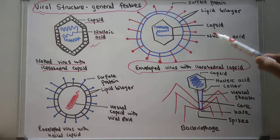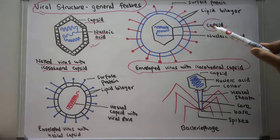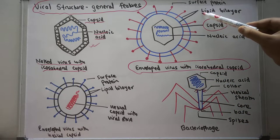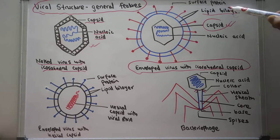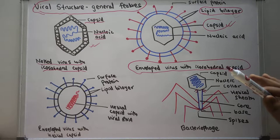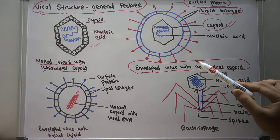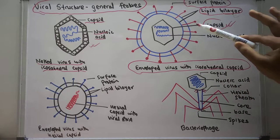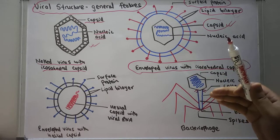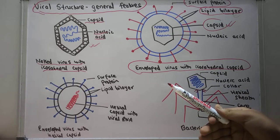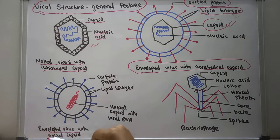The next virus is the enveloped virus with icosahedral capsid. The icosahedral capsid is enclosed within the lipid bilayer — you can see this lipid bilayer of the virus. From this lipid bilayer we can see the various surface proteins. The surface proteins are the spikes that erupt from the inner layer of the lipid bilayer. Various spike proteins and surface proteins can be found, and they vary from virus to virus.